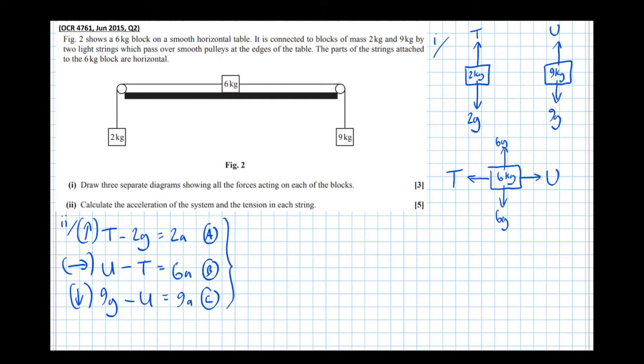Well I've noticed that if I add all three of them together, A plus B plus C, so add all the left hand sides together, I get T take 2g plus U take T plus 9g take U equals all the right hand sides added together. So 9 and 6 is 15, add 2 is 17a. And notice we get T take T so the T's cancel.